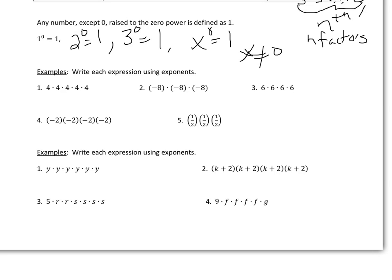Let's look at a few examples writing each expression using exponents. Remember, what's being multiplied over and over again is your base. For example, 4 is being multiplied by itself 5 times, so that's going to be 4 to the 5th power. Here, negative 8 is multiplied by itself, so negative 8 is your base — you should put parentheses around it to show it's a negative number being raised to a power, giving negative 8 to the 3rd power. Here, 6 is the base with four 6s, so it's 6 to the 4th power. And here, the base is negative 2 with four of them, so it's negative 2 to the 4th power.